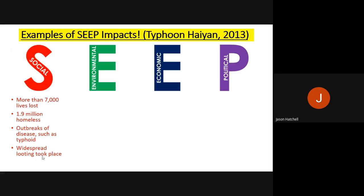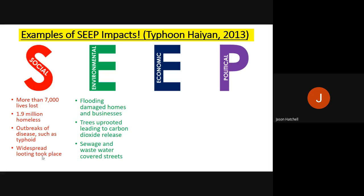Now let's think about the environmental impacts of Typhoon Haiyan. First, flooding damaged homes and businesses — this is environmental because we're talking mainly about the large-scale flooding due to heavy rainfall. Second, trees were uprooted, releasing stored carbon dioxide into the atmosphere, which has impacts on climate change. Third, sewage and wastewater covered the streets of Tacloban, which severely worsened environmental conditions in the area, and also links to social impacts through health effects on people.